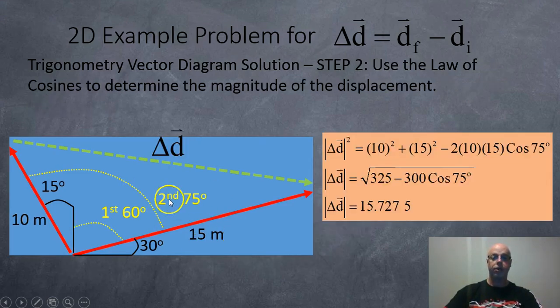Okay, so now we got this angle which is directly across from the displacement, we can use the law of cosines to find the magnitude of our displacement. So here we go with the law of cosines: we got 10 squared plus 15 squared subtract 2 times 10 times 15 times cos 75, and after working out the math we end up getting a magnitude of 15.7275.